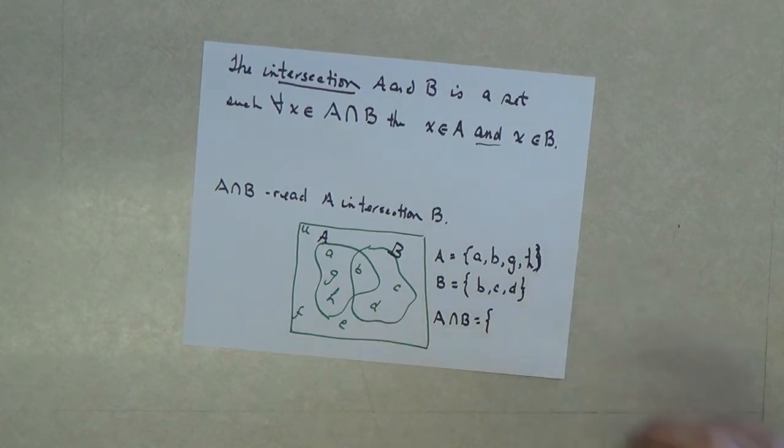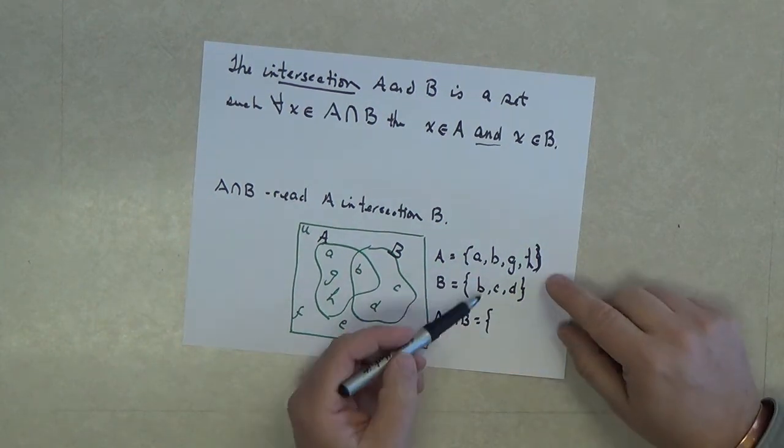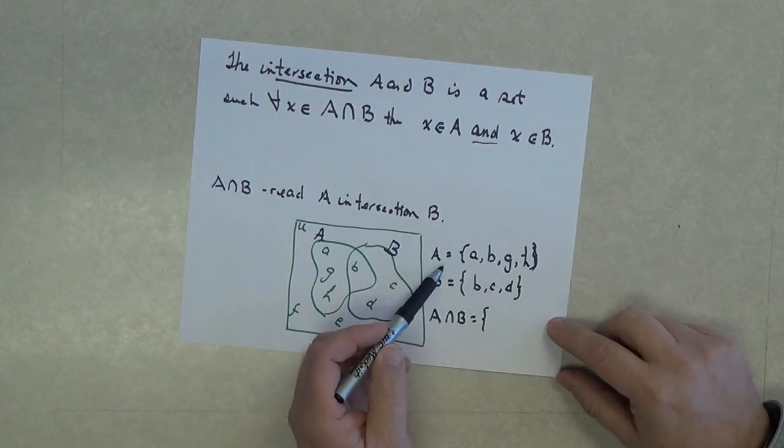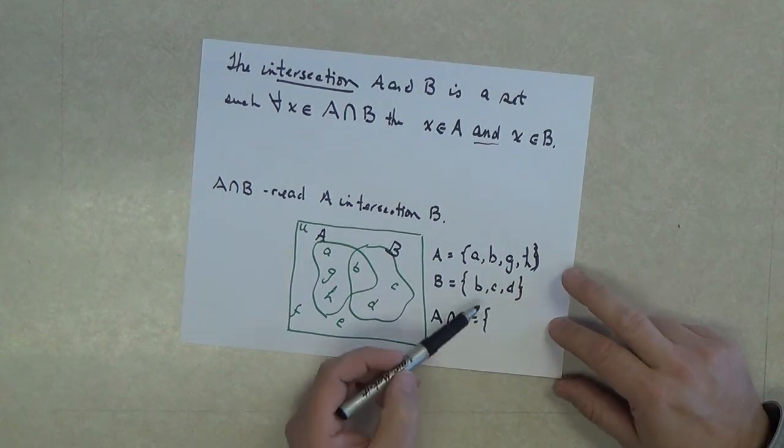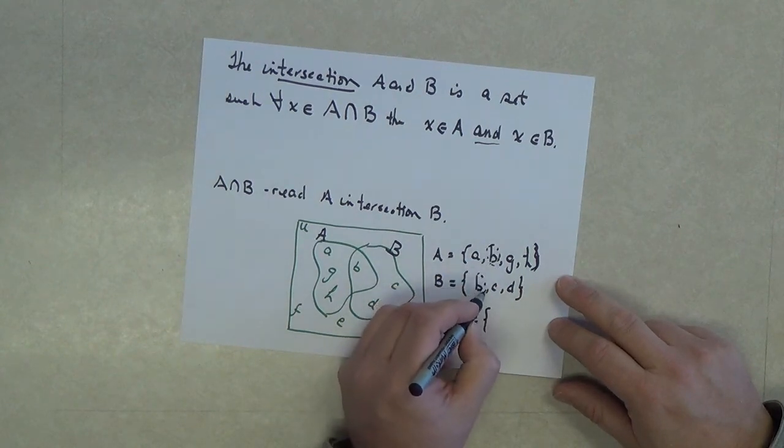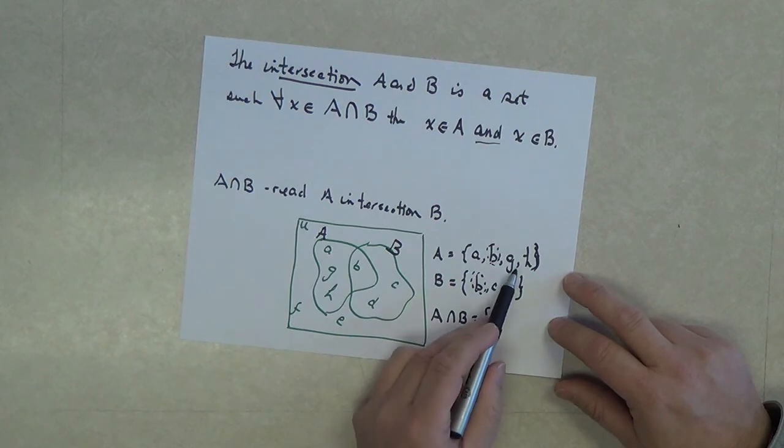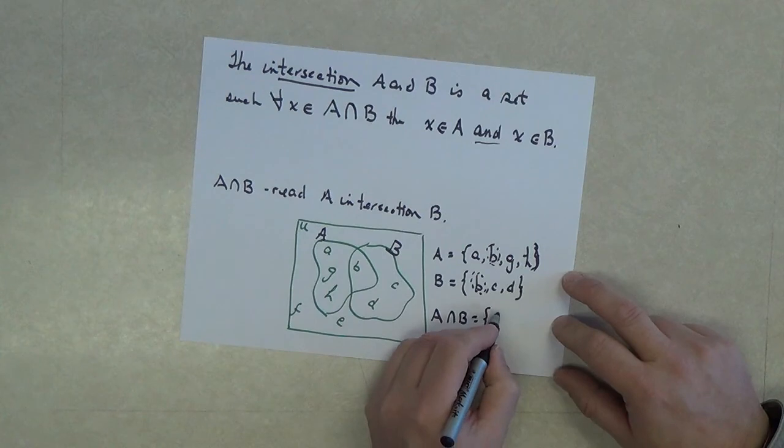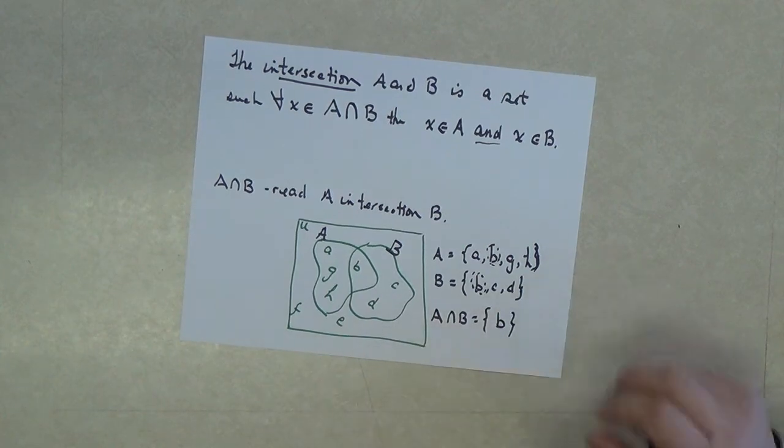When we look for the intersection of A and B, we're looking for elements that belong to both of these lists. A is only in set A, it does not belong to B. We notice that B belongs to both sets, but G does not, H does not, nor does C or D. So, the only element in this example that belongs to the intersection is the element B.